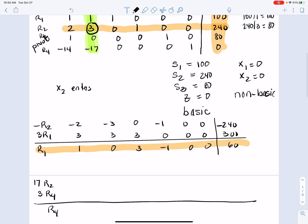So 17r2 would be, let's see, 17 times 2 is 34, 17 times 3 is 51, then we have 0, then we have 17, then two 0s, then the right-hand side. 17 times 240, I believe, is 4,080. And then 3r4 would be negative 42, negative 51, 0, 0, 0, 3, and 0.